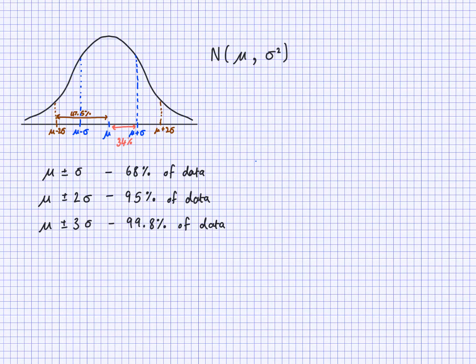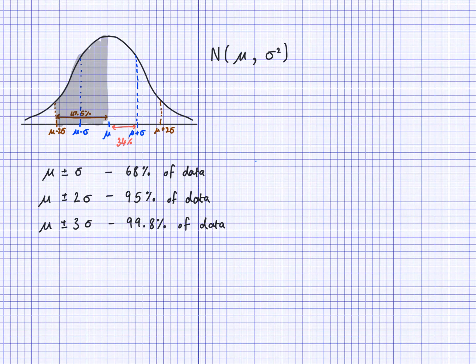What we're really thinking about is the area under the curve, which gives us the probability in a normal distribution. So 47.5% of the data lies between the mean and two standard deviations on one side, and another 47.5% on the other side. We can also do subtractions to find other sections — for example, 47.5 minus 34 gives the section between one and two standard deviations.